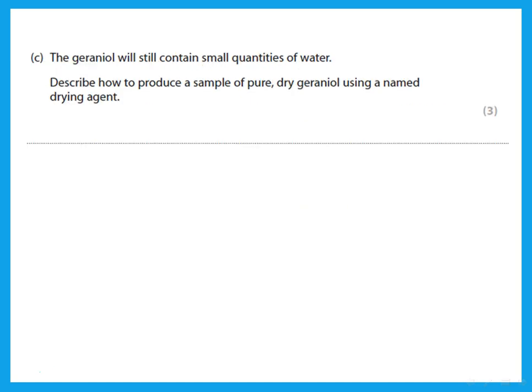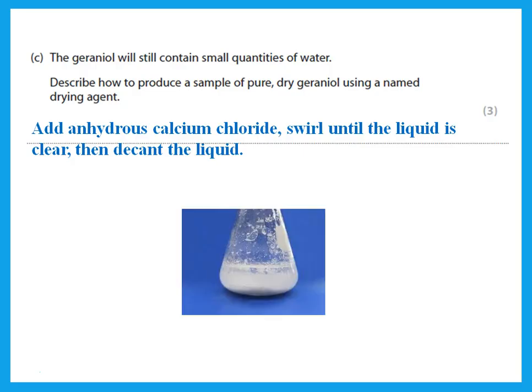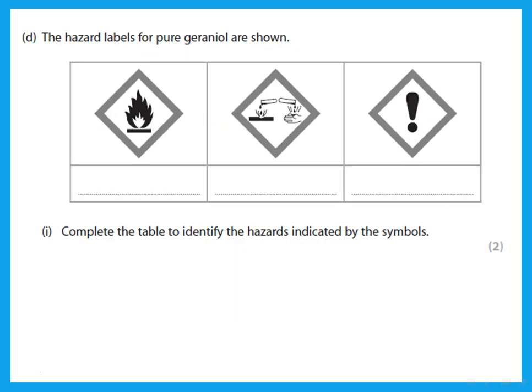The geraniol will still contain small quantities of water. Remember that when you use the separating funnel, there is still some water in the compound. Describe how to produce a sample of pure dry liquid using a named drying agent. This is by adding anhydrous calcium chloride. We swirl until the liquid is clear—when the liquid becomes clear with no more bubbles, then we decant the liquid, and this is now a dry liquid.